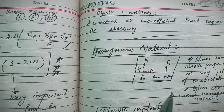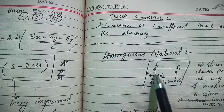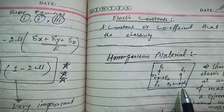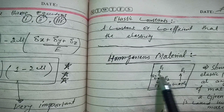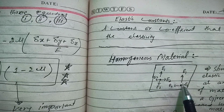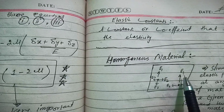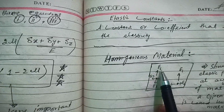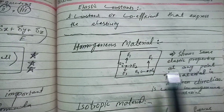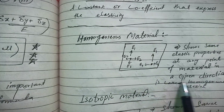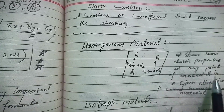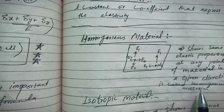If this material is homogeneous, then at any point in a given direction its elastic property is the same. For example, if we consider the north direction at one point, and then move to another point also in the north direction, the elastic property is the same in both cases. So we can define: elastic property at any point of a material in a given direction is the same — this is called a homogeneous material.